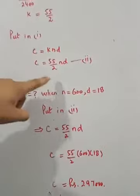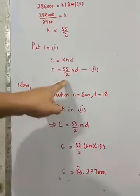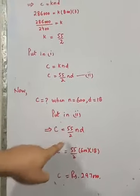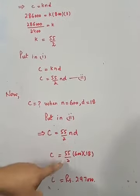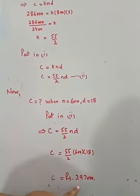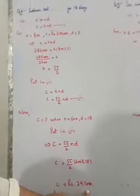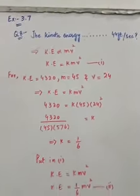This value comes here. Now c is to be found, n is given, d is given, and k value is already there. Put in equation 2: c = (55/2)nd. Put the value of n and d, solve it, and you get 297,000.